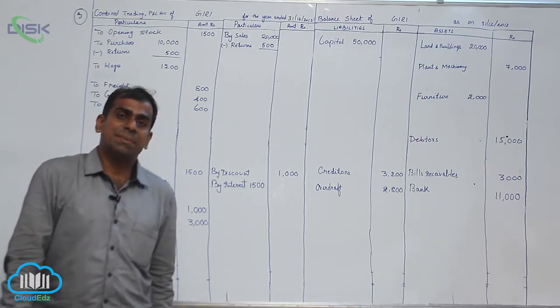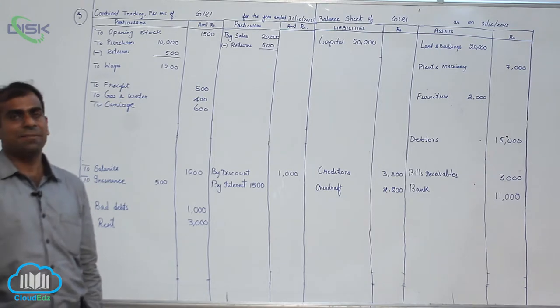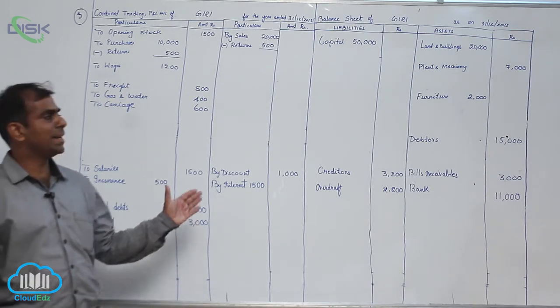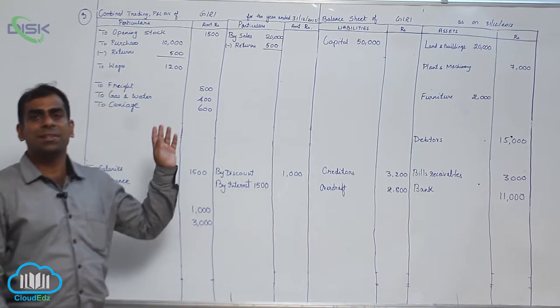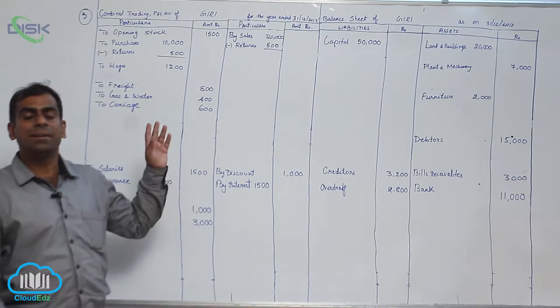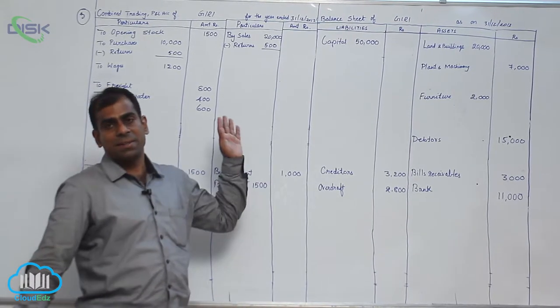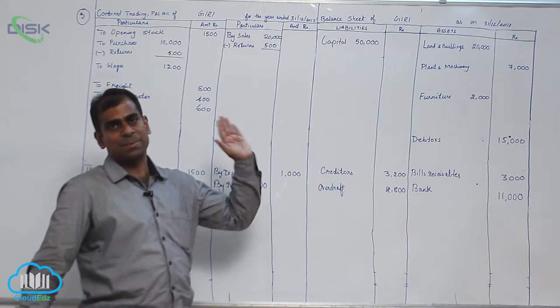Continuing with the adjustments, adjustments have a double effect - one effect will be in trading or P&L and the other effect will be in balance sheet. You can recollect your journal entries for adjustments, or refer to the table in which we discussed how to treat an item when it is given in adjustment.